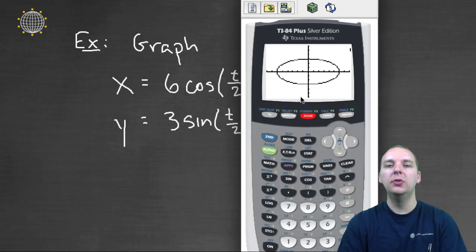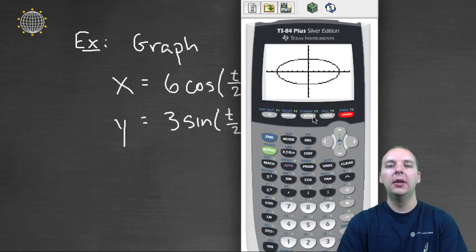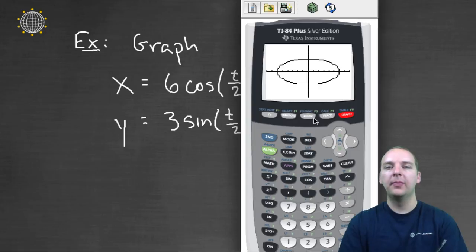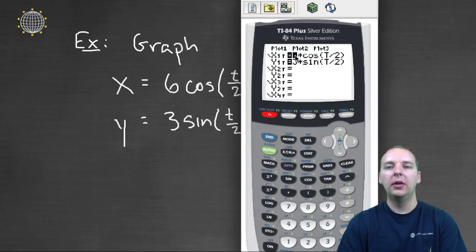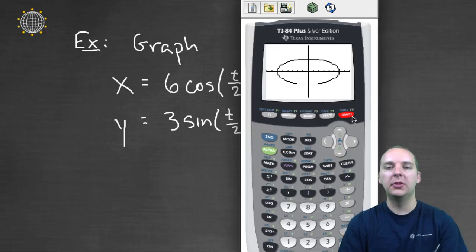There are also some zoom options that I won't go through. I think they're pretty self-explanatory. But anyway, this is how we graph on a TI calculator. We change the mode, you type in your equation, the X for X, the Y for Y, you adjust the windows, you push graph, and this is how you graph parametric equations.